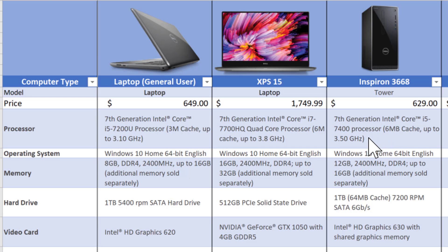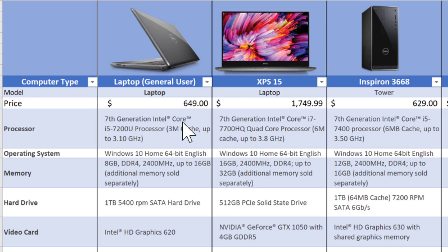The desktop runs at 3.5 gigahertz versus 3.1 in the laptop. Normally today people buy more laptops because of portability. Comparing similar models, we have a seventh generation i5 laptop here, and jumping up we get an i7 quad core with greater cache and greater speed.